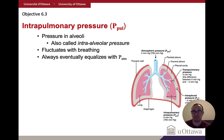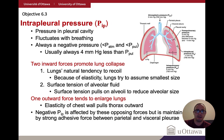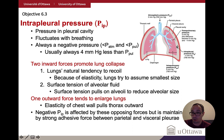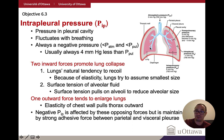Intrapleural pressure is the pressure within the fluid-filled space between the pleural layers. It also fluctuates with breathing but is always less than intrapulmonary pressure. This difference must be maintained because if intrapleural pressure equals or exceeds intrapulmonary pressure, the lungs will collapse.